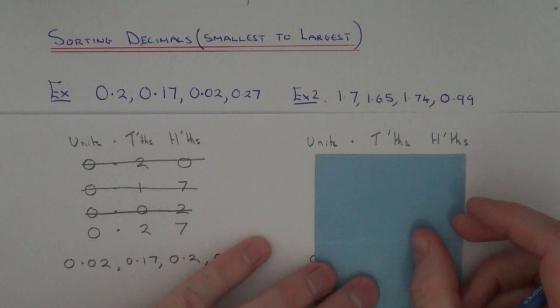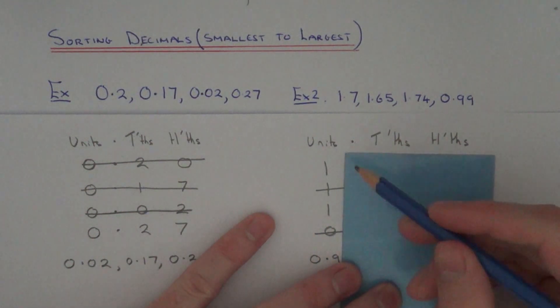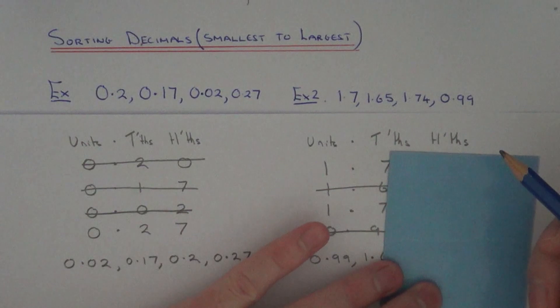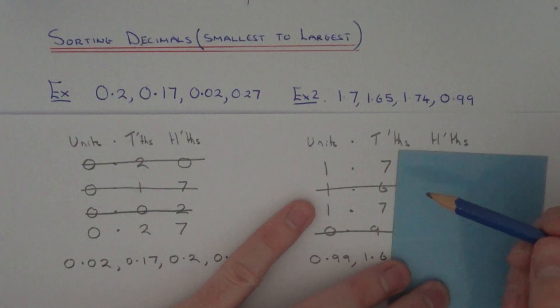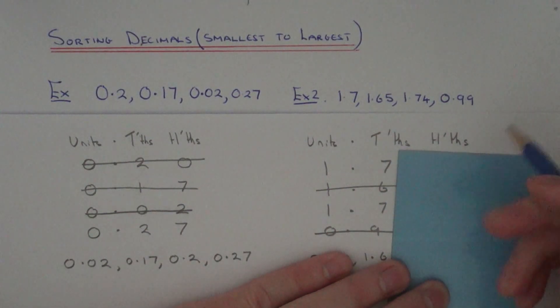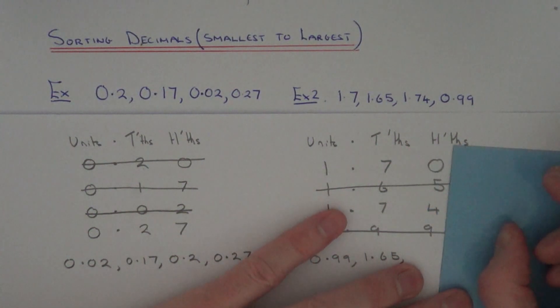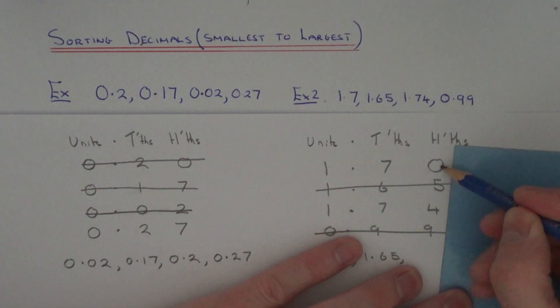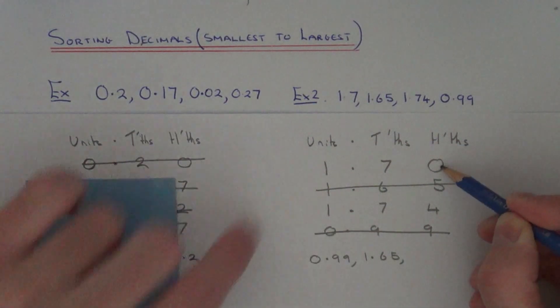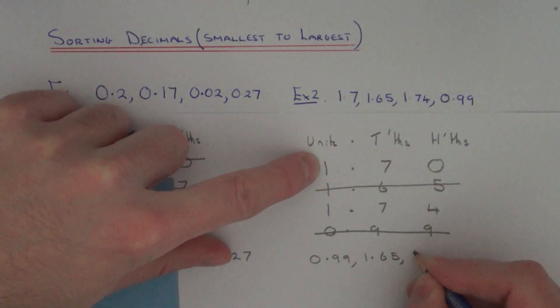So finally we've just got two left now. We've got 1s in the first column, so move to the next column. We've got 7s in the next column. So again we have to go to the hundredths column to decide which one is the next smallest. So in the hundredths column we've got a zero here, so that will mean 1.7 is our next biggest decimal.